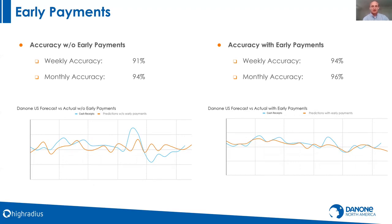Similarly, we incorporated early payments. There are times when customers pay early or we have a chance to request early payment. Being able to factor in those early payment opportunities further increased forecast accuracy. Previously, when our historical data showed no early payments and then early payments suddenly appeared, it threw a wrench in the process. Now the system handles those adjustments, improving both our weekly and monthly accuracy significantly.